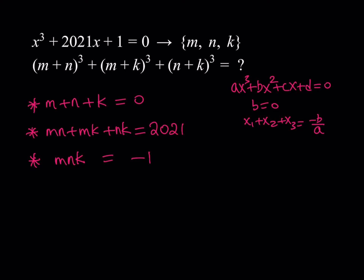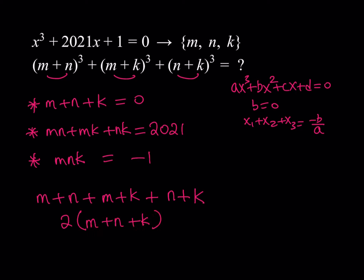Now I'm supposed to evaluate this expression, and I'm going to present two solution methods. First, notice that the expressions m plus n, m plus k, and n plus k, without the cubes, give us something interesting. If you add them, you get 2 times (m plus n plus k). We know that m plus n plus k equals 0, so this is also 0.